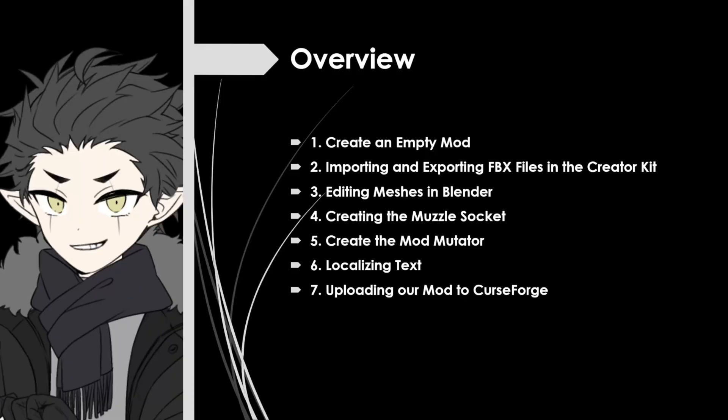We'll start this video off by creating an empty mod. Then we'll cover how to export files in the creator kit. Then we'll edit that file in Blender and go over how to import that file back into the creator kit. Next we're going to create a muzzle socket on our wand skeleton to control where on the wand spells originate from. Then we're going to create a data table in mod mutator to add our custom wand into the game. Then we'll finish off this video by localizing the text and uploading our mod to CurseForge.